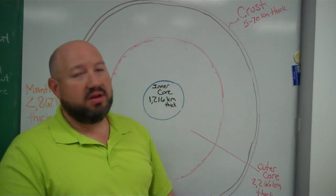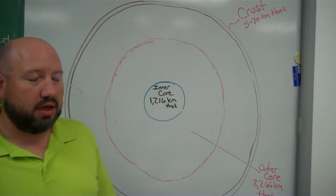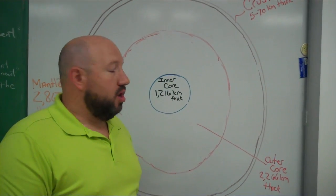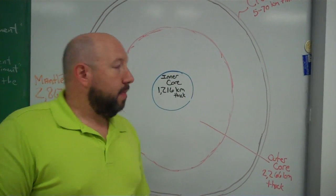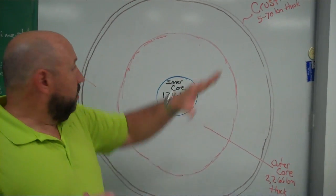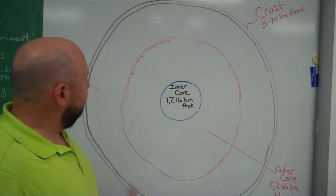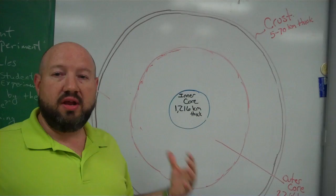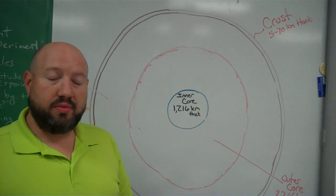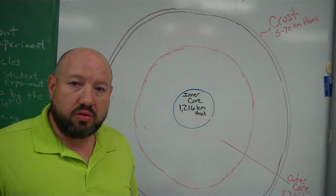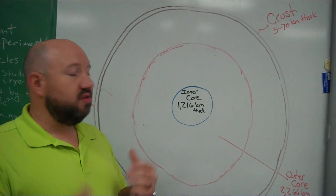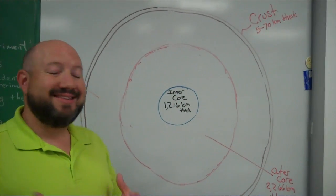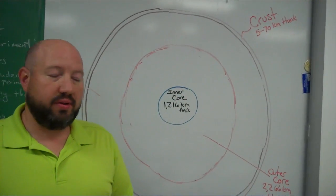The crust is approximately five to seventy kilometers thick, depending on where on the planet you are. It completely encompasses the planet — whether it's on ground like under mountains, or below the sea on the ocean floor. All of that is the crust of the planet.